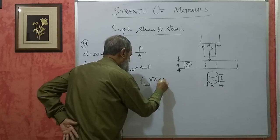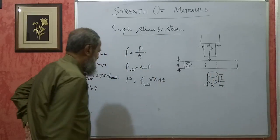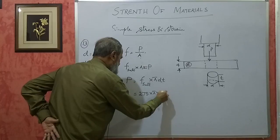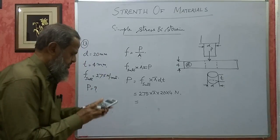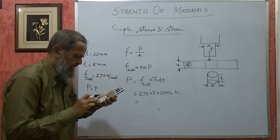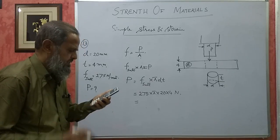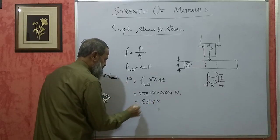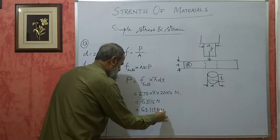So P = 275 × π × 20 × 4. This works out to 69,115 Newton approximately. Dividing by 1000, it will be approximately 63.115 kilo Newton. This is the force required to punch the hole in that plate.